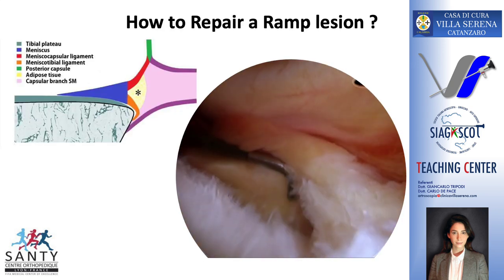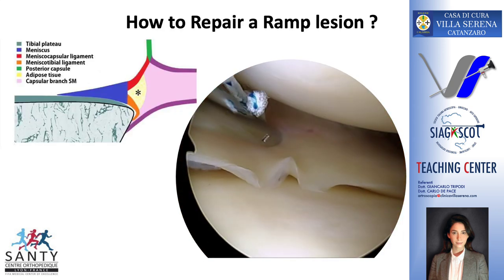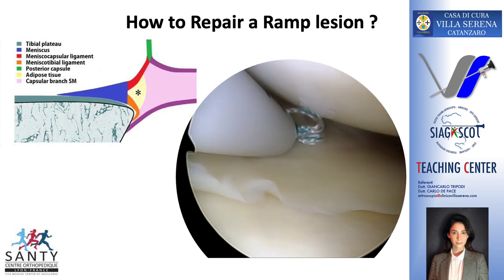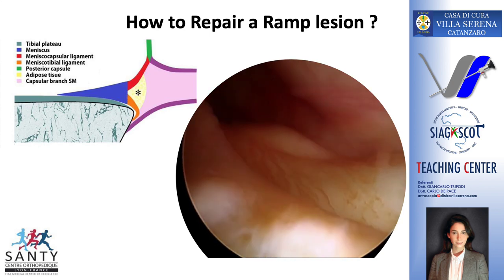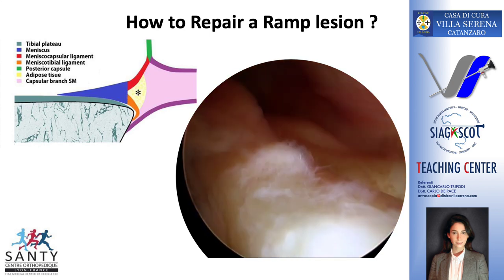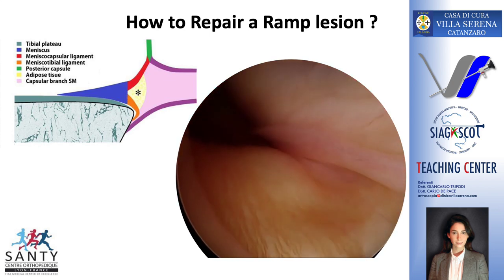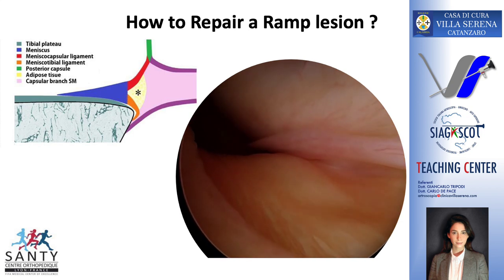It's important to think about the anatomy so we can understand why some treatments tend to fail. In general, all-inside devices are anchored in the capsule and they are not able to catch the meniscal tibial ligament, especially in chronic cases when the ligament falls behind the tibia.